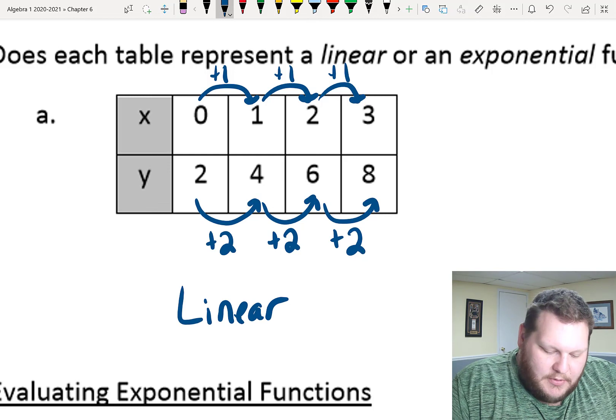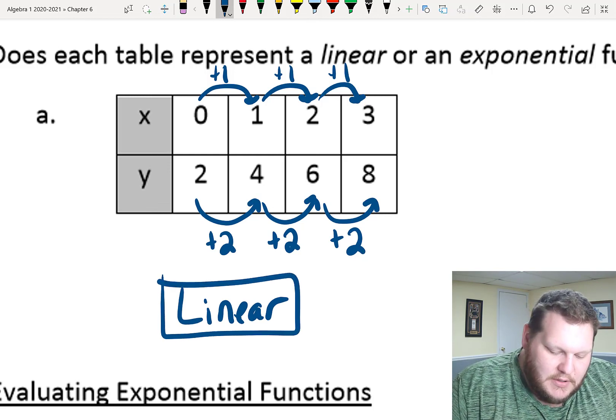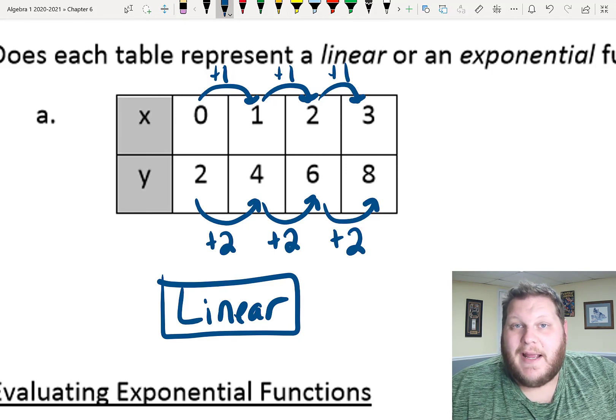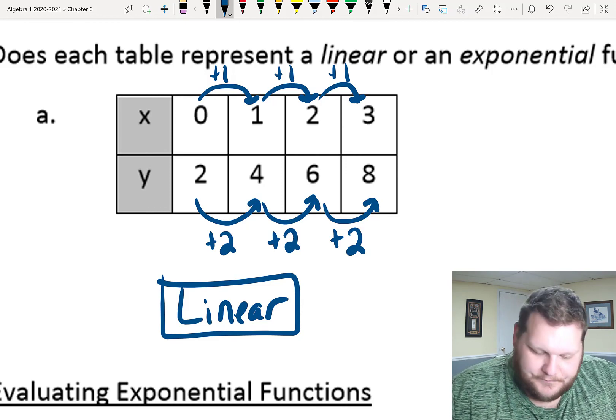If I have a constant addition, we know that that is linear. We looked at that back in Chapter 3. A linear function is a constant rate of change, meaning there's a constant addition or subtraction happening in my outputs, my y values.